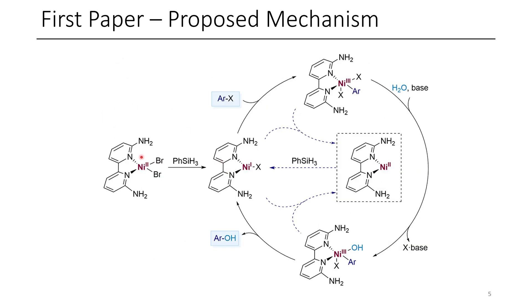Initially, we start with this nickel(II) precatalyst that's converted to the active catalyst through reduction with phenylsilane. This nickel(I) complex, which is the active catalyst, can then intercept an aryl chloride or bromide and undergo an oxidative addition to the nickel(I) center. Once this nickel(III) center is formed, water is able to displace one of the halide ligands, and through reductive elimination, we're afforded with our phenol. This should regenerate the nickel(I) catalyst.